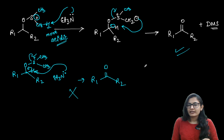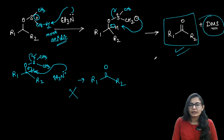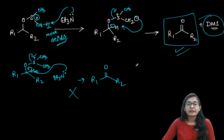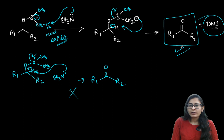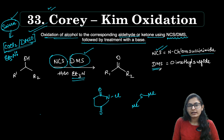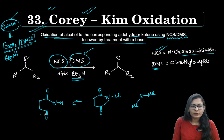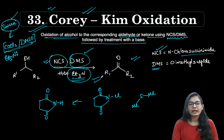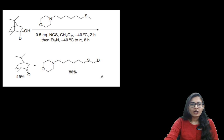Then the CH₂⁻ intramolecularly abstracts a proton, giving the oxidation product — the ketone. Be careful about this in all these reactions. The byproduct is DMS — so we started with DMS and we end up with DMS again in the Corey-Kim oxidation. The N-chlorosuccinimide becomes normal succinimide (no chloro). This is also a two-step reaction, with triethylamine added at a lower temperature.